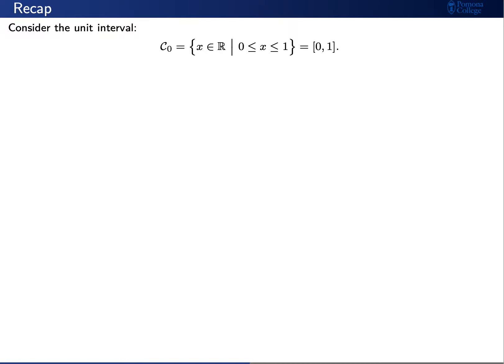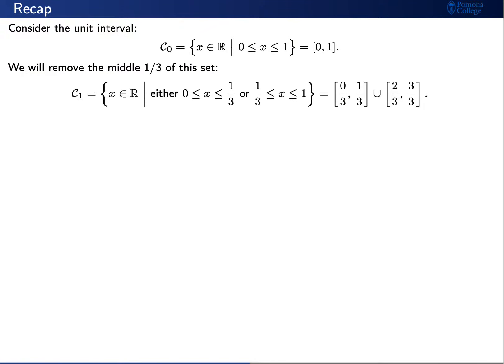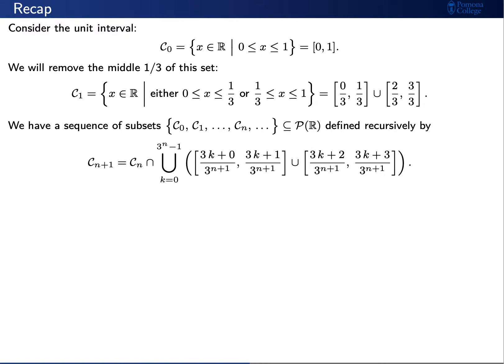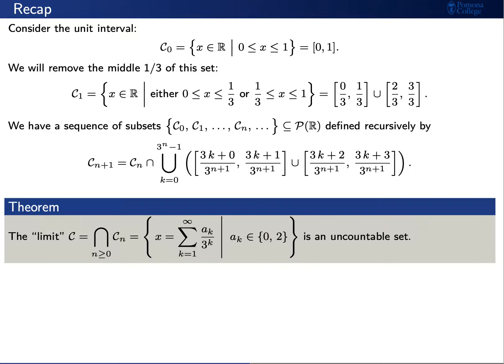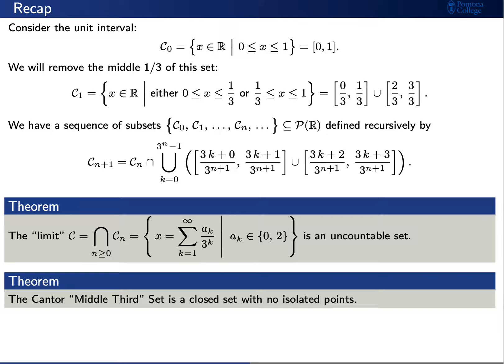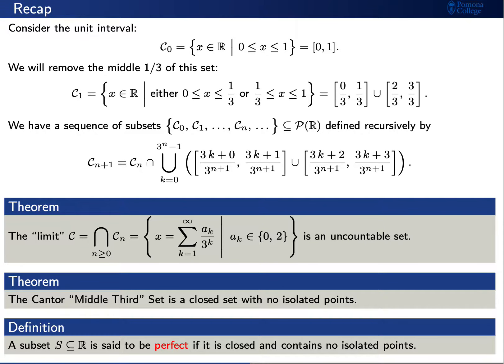We then explained how all of this is related to the Cantor middle third set. Let C₀ denote the closed interval from 0 to 1. We can remove the middle one-third of this set to find C₁, which is the union of the closed intervals from 0 to 1/3 and from 2/3 to 1. In this fashion, we have a sequence of subsets C₀, C₁, through C sub n, defined recursively as you see here on your screen. The Cantor middle third set is an uncountable closed set that has no isolated points. More generally, a subset S of the real numbers is said to be perfect if it is closed and contains no isolated points.